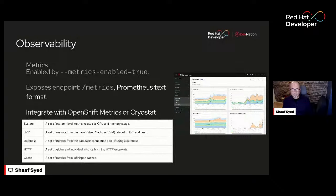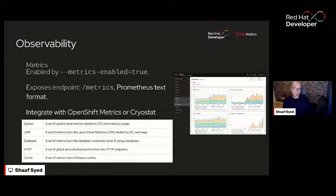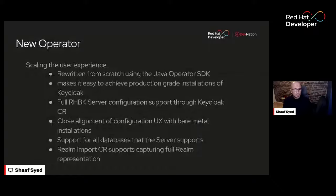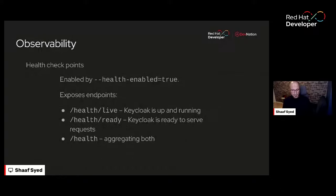Keycloak also integrates with Cryostat. Cryostat works with JFR — the Java Flight Recorder — which captures JVM-related details like garbage collection and bottlenecks. You can use Cryostat together with OpenShift to extract those details from the system. The health endpoint, coming from the Quarkus health extension, lets you check whether the system is up. Automation systems can react when health is degraded; simply provide `--health-enabled=true` on the command line to activate it.